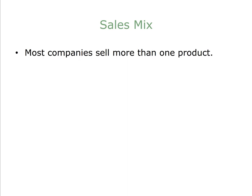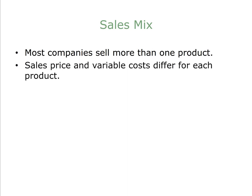Most companies sell more than one product, so our next topic will be calculating the break-even point or the sales required to reach a target profit for a company with more than one product. Sales price and variable costs differ for each product, so each product makes a different contribution to profits. The same CVP formulas we used earlier can apply to a company with multiple products.